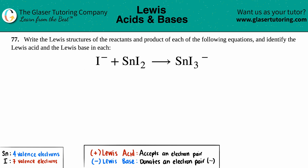Number 77: write the Lewis structures of the reactants and product of each of the following equations and identify the Lewis acid and Lewis base in each. Writing Lewis structures should not be something new — we have a whole chapter dedicated to that. If you need a more in-depth review, go back to that chapter — it's chapter seven in the textbook, and we also have it on the playlist.